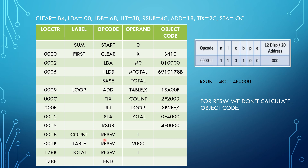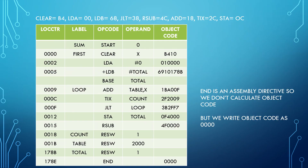Next we have RESW (reserve word). For RESW, we do not calculate an object code. Lastly, we have N, which is an assembly directive, so we do not calculate the object code, but we write the object code as 0000.